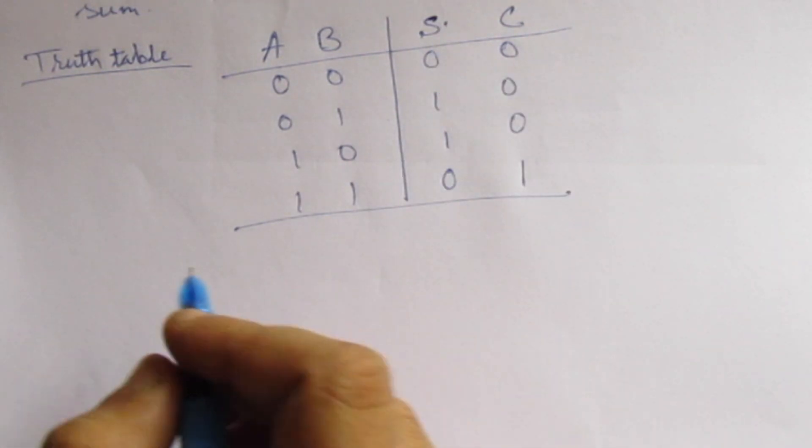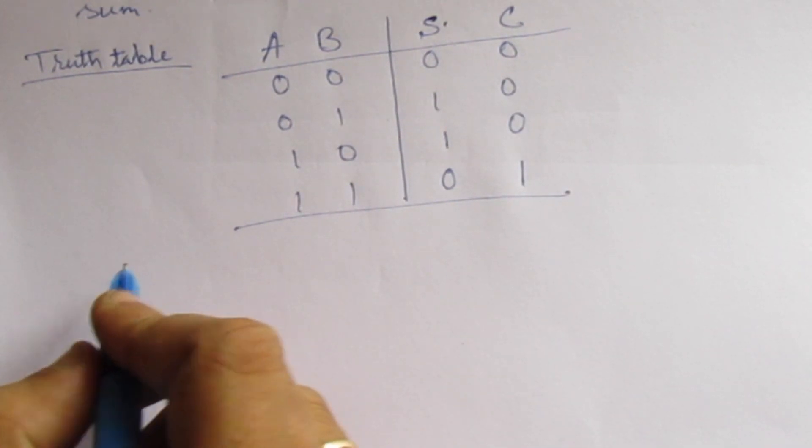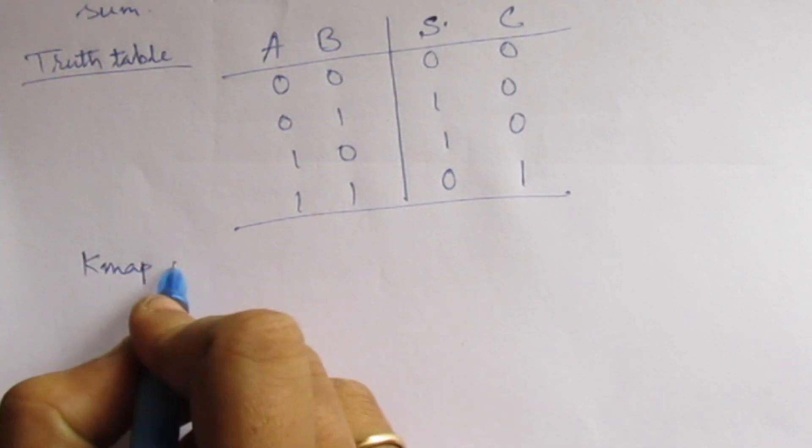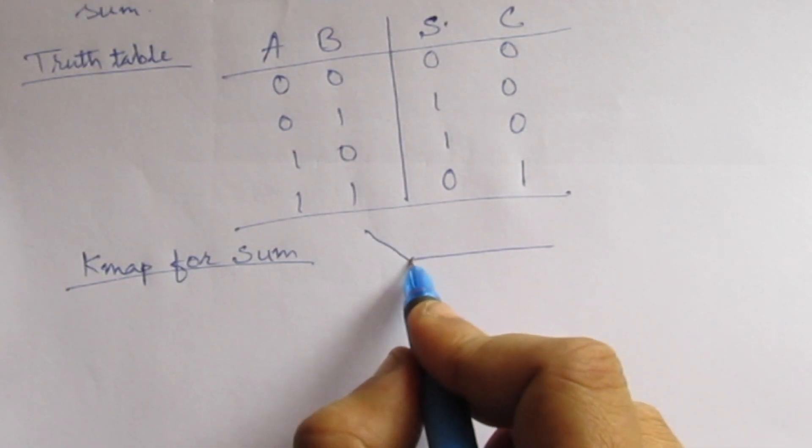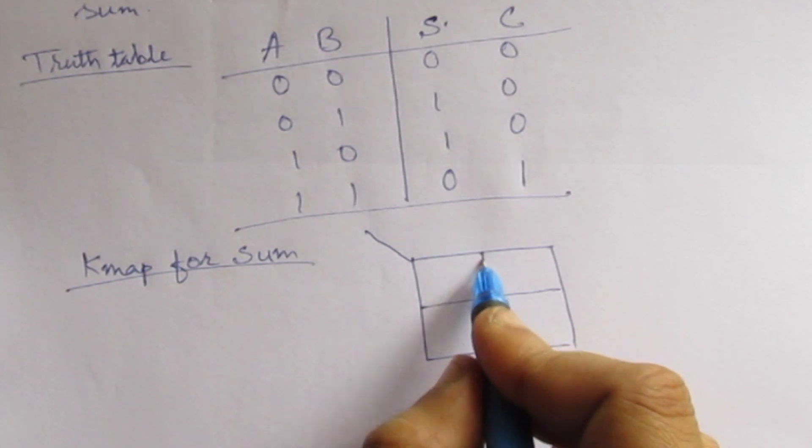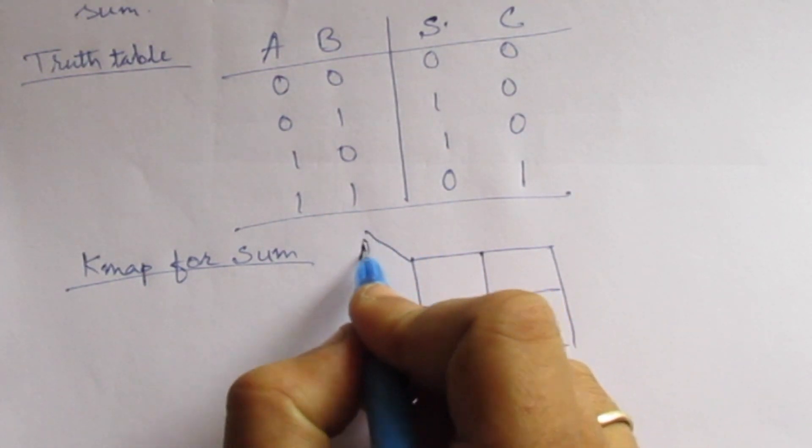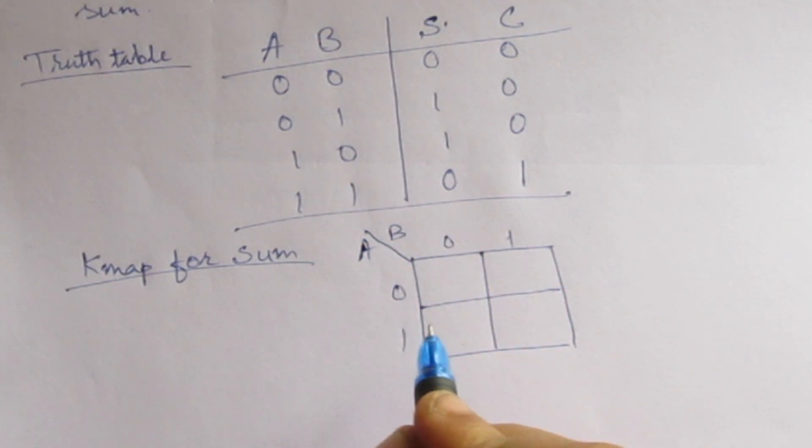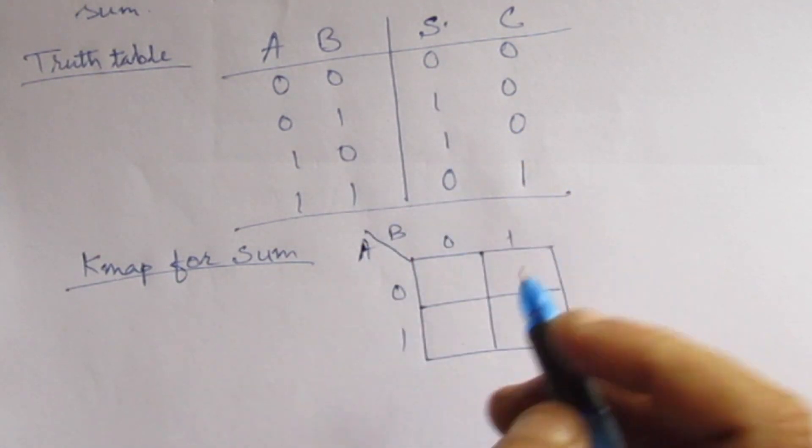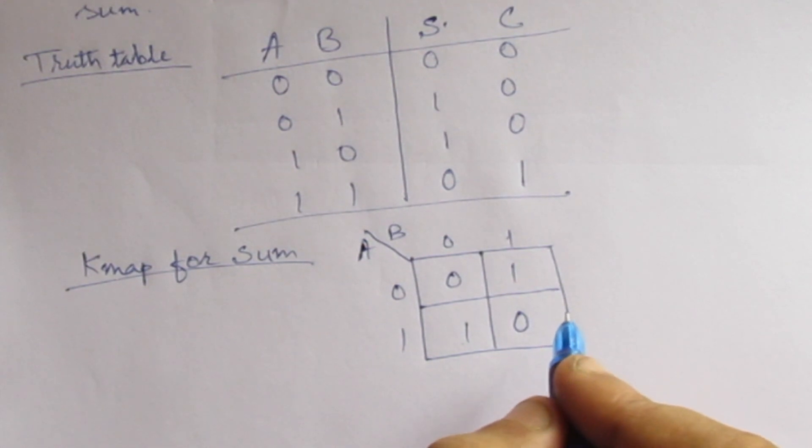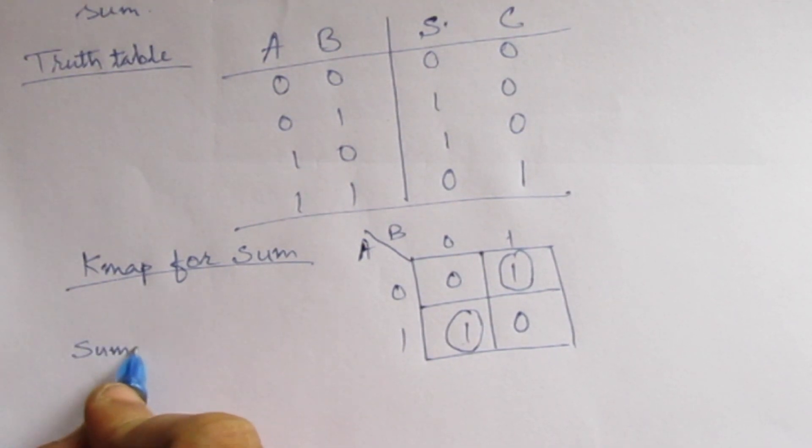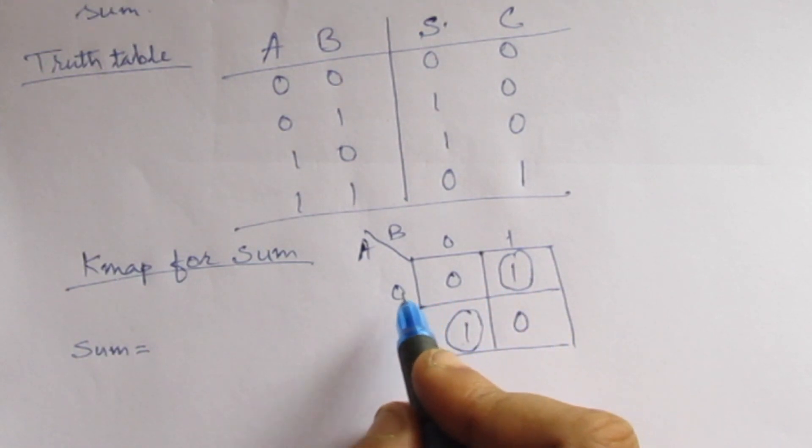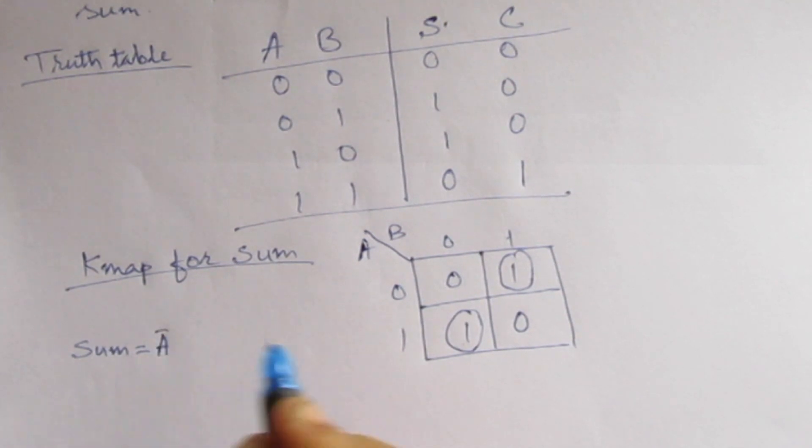Let us make the K-map for sum. For this 1, A is equal to 0, so we write A bar, and B is 1.